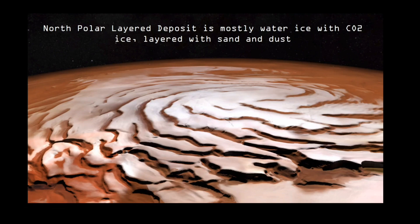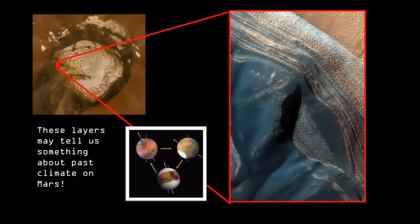The North Polar Layered Deposit, also known as the NPLD, located at the north pole of Mars, is made up of mostly water ice and CO2 ice layered with sand and dust. It's about two miles thick and approximately 600 miles across — pretty massive. The NPLD has really interesting layers that could potentially tell us something about past climate on Mars, just as ice cores do on Earth. This high-resolution image shows one of those layers; variation in the dust and ice layers could record fluctuations in Martian climate — times that it's really dusty versus really icy. If we can translate that record like we do on Earth, it could give us really valuable insights into Mars' past climate.